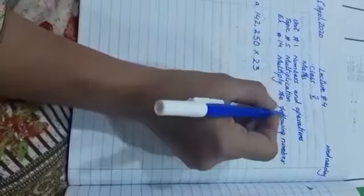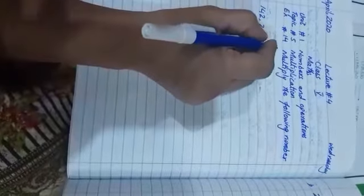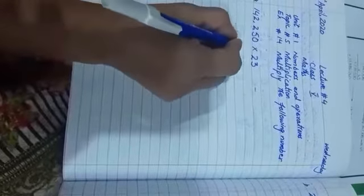Multiplication means addition multiple times. Exercise 14 is multiply the following numbers. In exercise 14, we are multiplying 6-digit numbers by 2-digit numbers. Number A is 142,250 multiplied by 23.